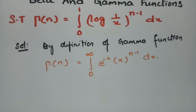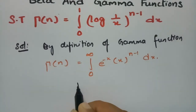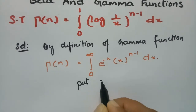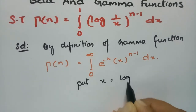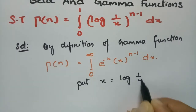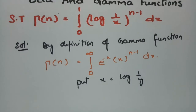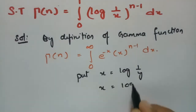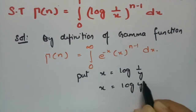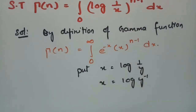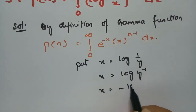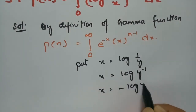In this equation, we have to put the substitution x is equal to log(1/y). So this becomes x is equal to log y inverse, which can be written as x is equal to minus log y.